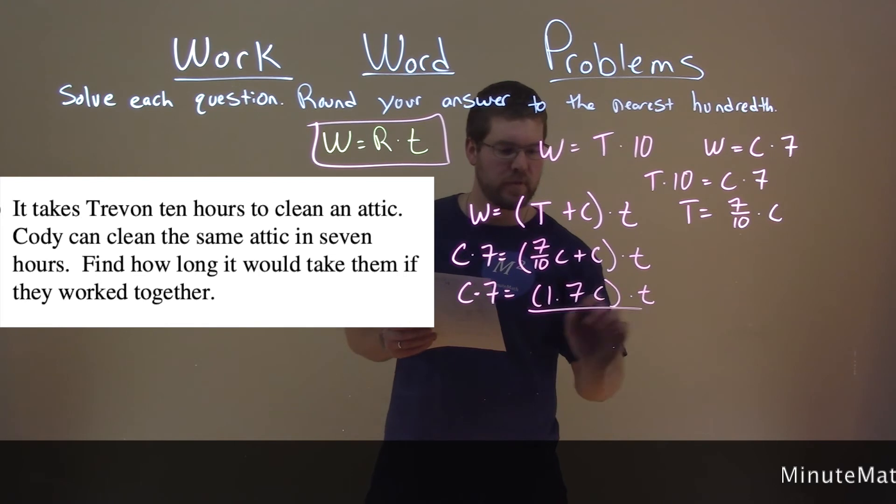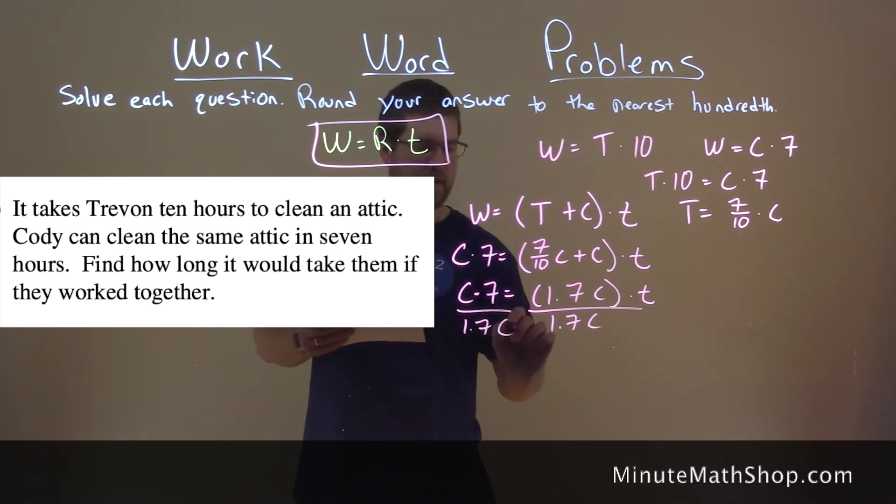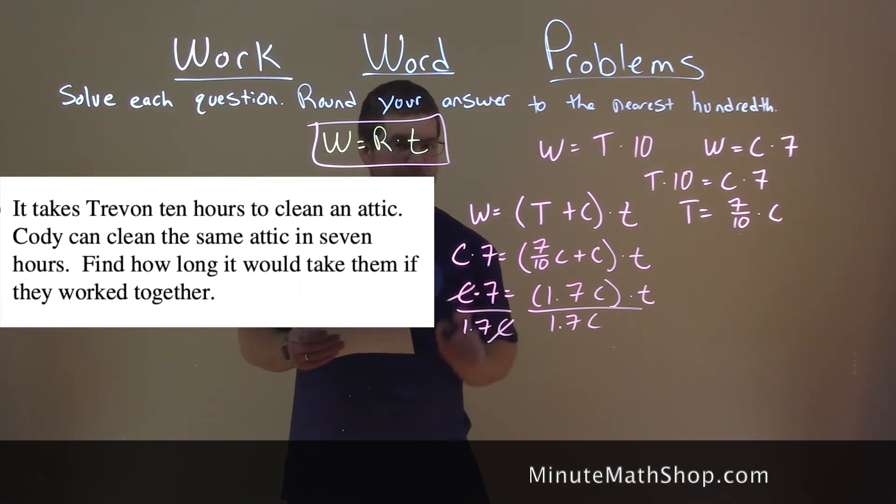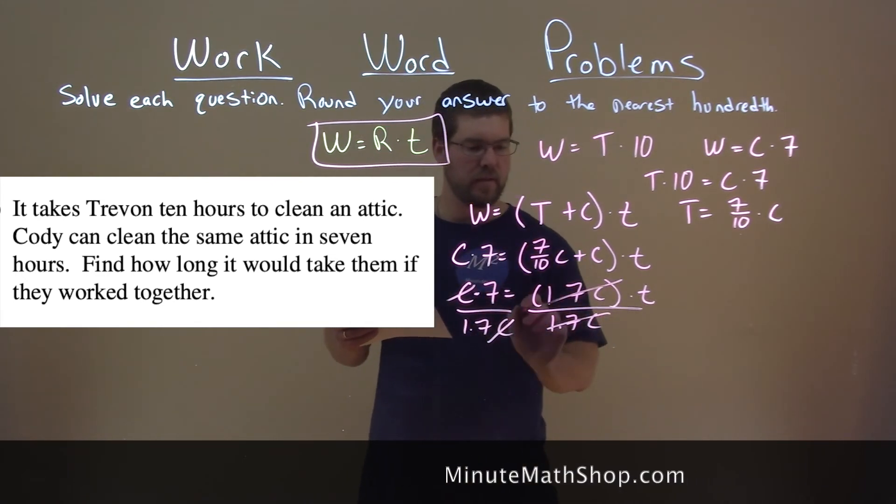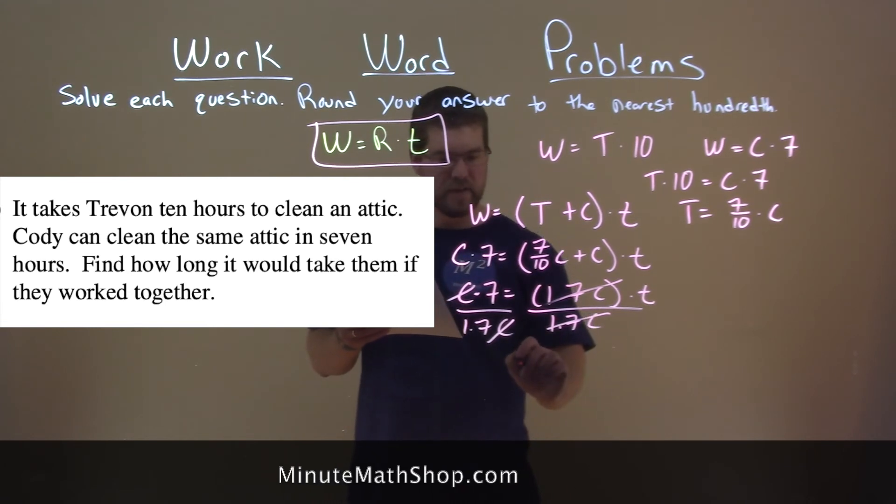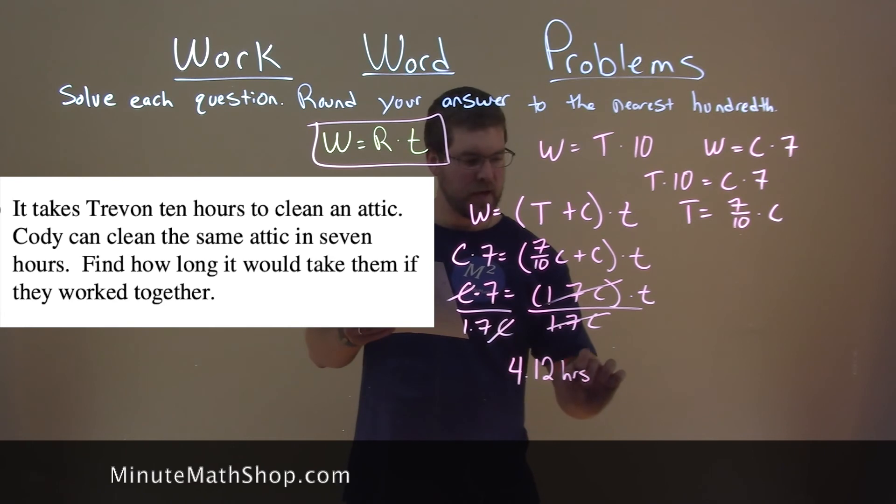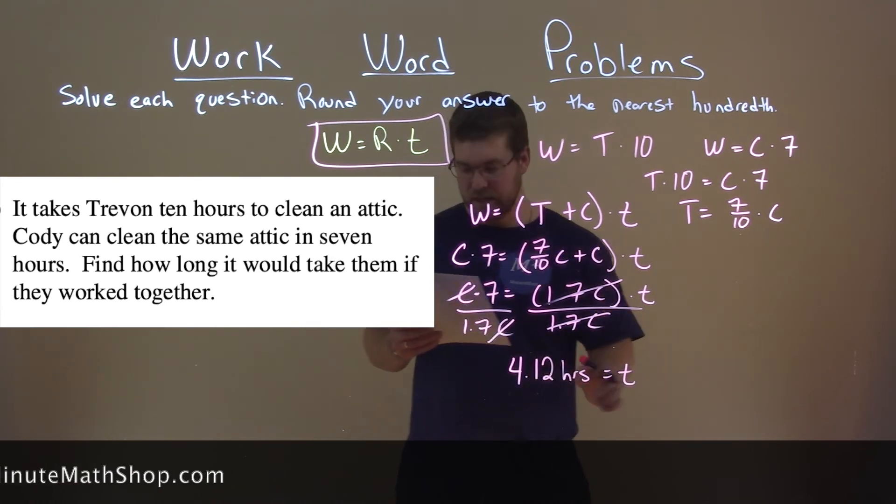We divide both sides by 1.7 C to get T by itself. And on this side, the C's do cancel. These cancel here. And we're left with 7 divided by 1.7, which is 4.12 hours. And that's left equal to the T that's left over here.